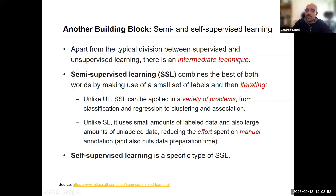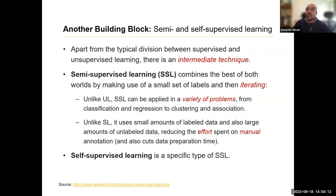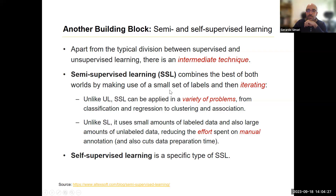We'll be using them very responsibly, as we'll see in a minute. The second building block is kind of like an intermediate between the well-known techniques of supervised and unsupervised learning. Semi-supervised learning combines, in certain situations, the best of both worlds by making use of a small set of labels and then iterating. This is at the heart of the ICN model that we're building towards.